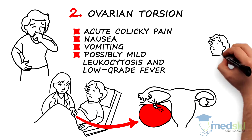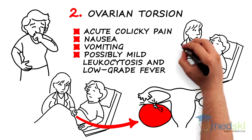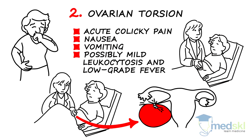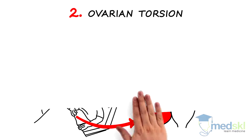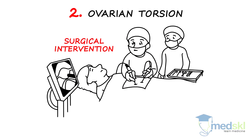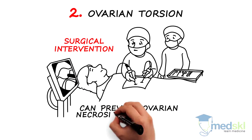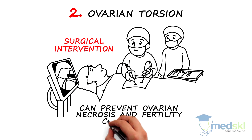While this is a clinical diagnosis, Doppler ultrasound can be helpful to assess for arterial blood flow to the ovary. Urgent surgical intervention to detort the ovary can prevent ovarian necrosis and fertility compromise.